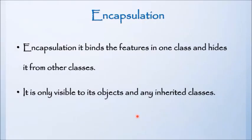Here, we can observe that the features of the person are available only if one class is inherited from it. It would be a black box to any other classes. The use of this model is called encapsulation. It binds the features in one class and hides it from other classes. It is only visible to its objects and any inherited class.